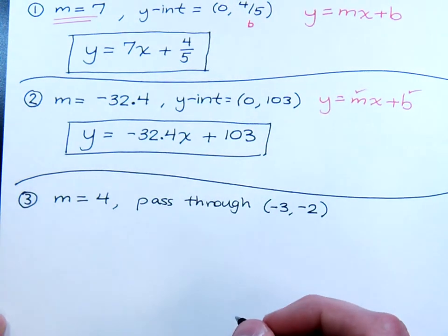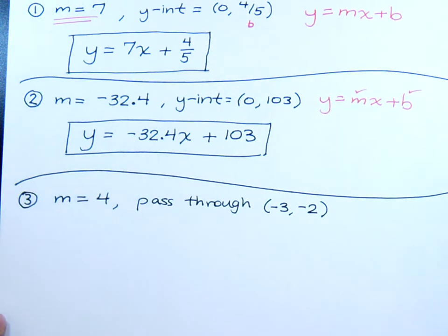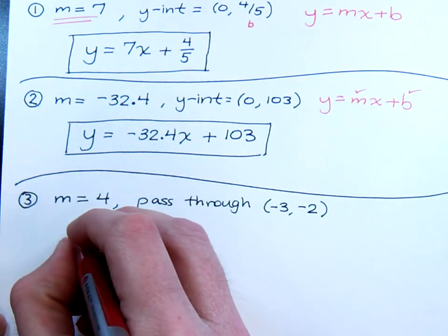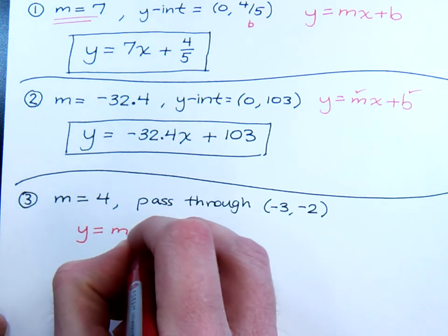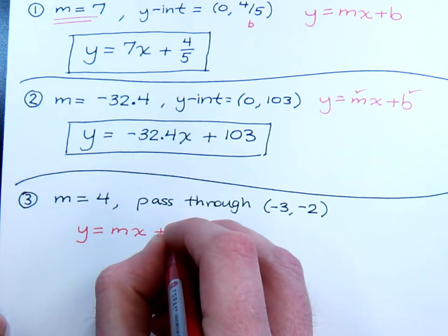There are several ways that we have of going about doing this, and let me show you one that's probably going to be the easiest and quickest way for you to find the equation. Again, working with the slope-intercept form, y equals mx plus b.